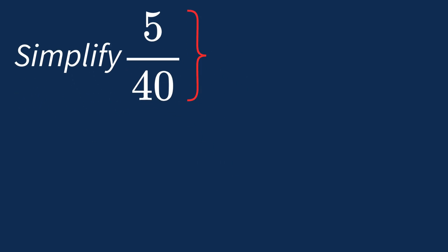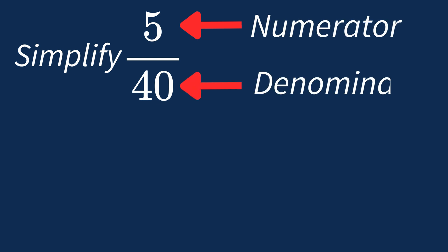To simplify 5 over 40, we need to look for the common factors between the top number, the numerator, and the bottom number, the denominator.